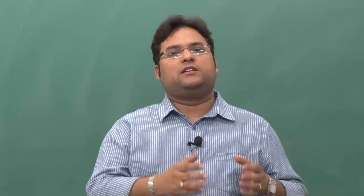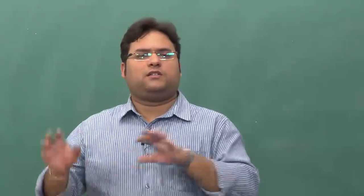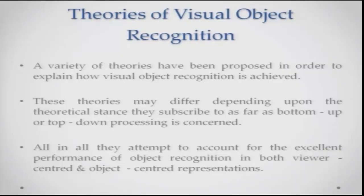We are asking whether it is sensory experience that leads us to form representations of objects and helps us recognize and interact with them, versus whether it is our memory and knowledge of the world that helps us do so. Overall, the goal of object recognition theories is to account for our excellent capacity for recognition — the fact that we make errors very rarely and that we recognize objects rather quickly.